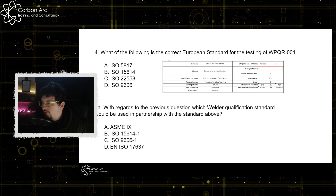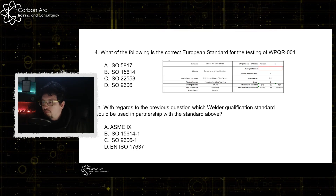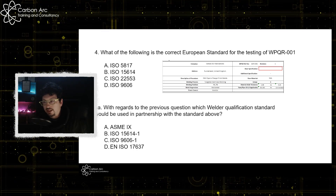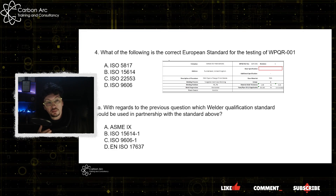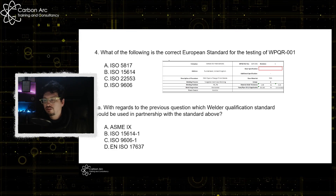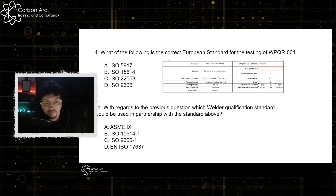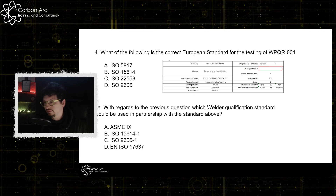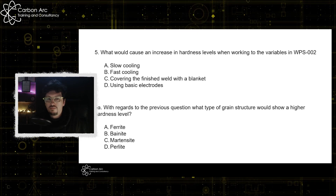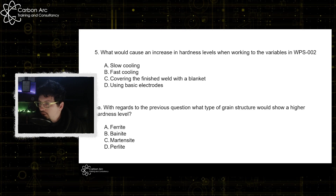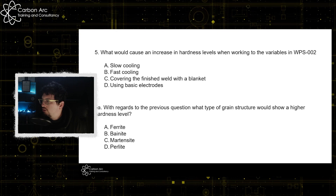With regards to the previous question, which welder qualification standard would be used in partnership with the standard above? If we're using ISO 15614 to qualify our procedures, we use ISO 9606 to qualify our welders.